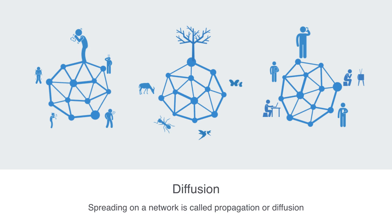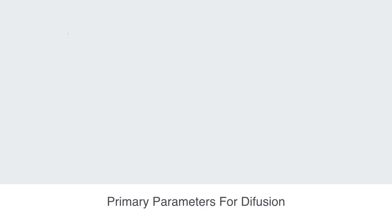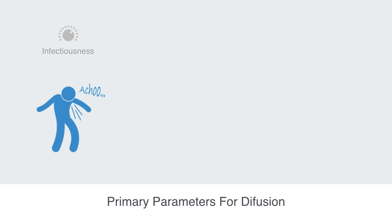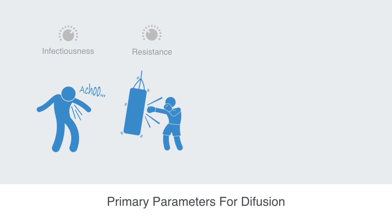How diffusion happens and how long it takes is defined by a number of different parameters. We'll just list the primary factors involved here before looking at them individually. Firstly, we have some infectiousness metric — how infectious is the phenomena that is spreading on the network. A corollary to this is asking how resistant are the nodes to this contagion, giving us a resistance parameter.